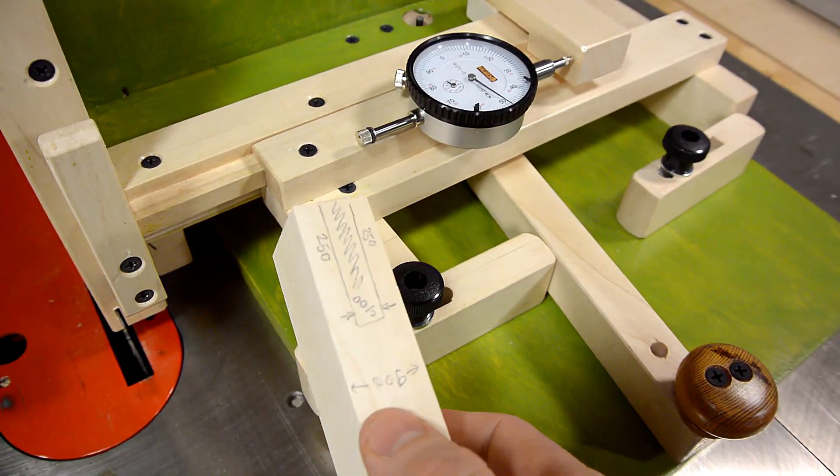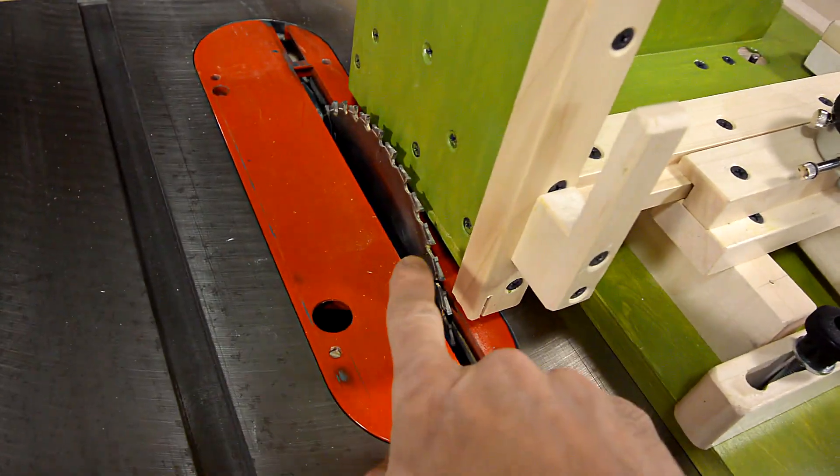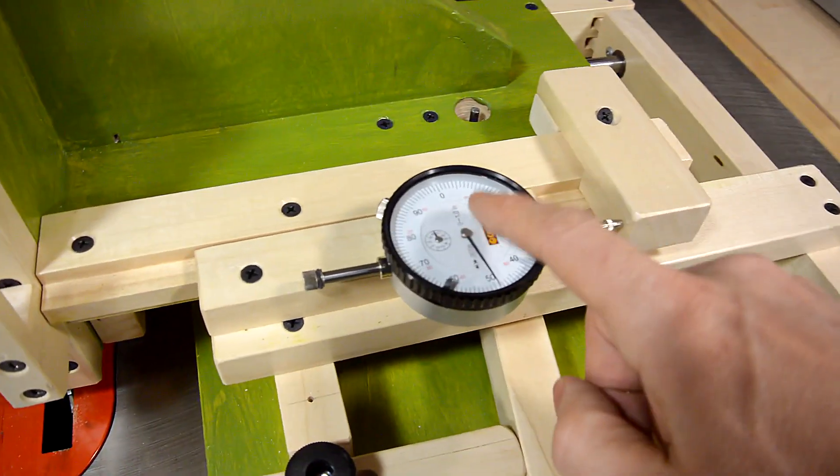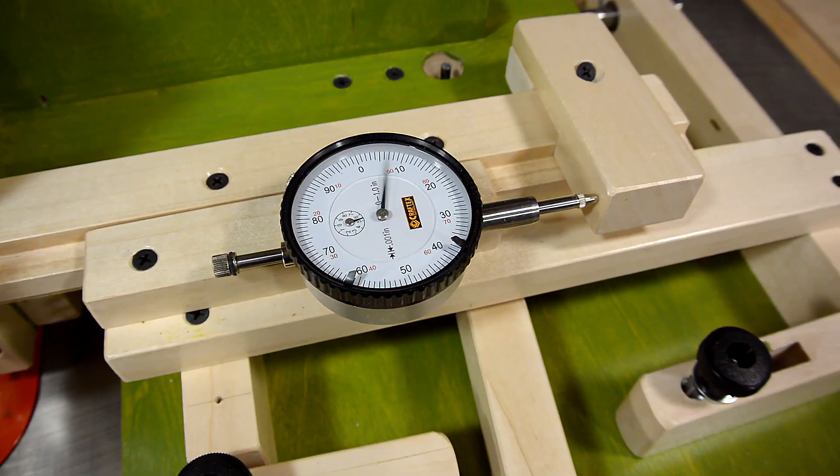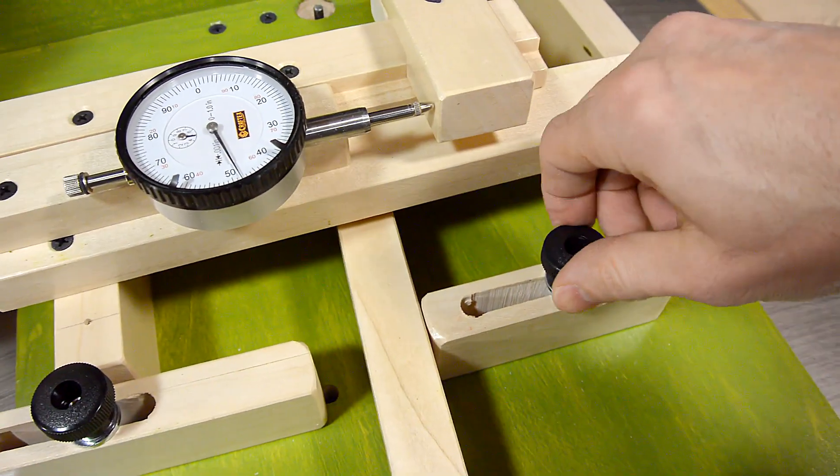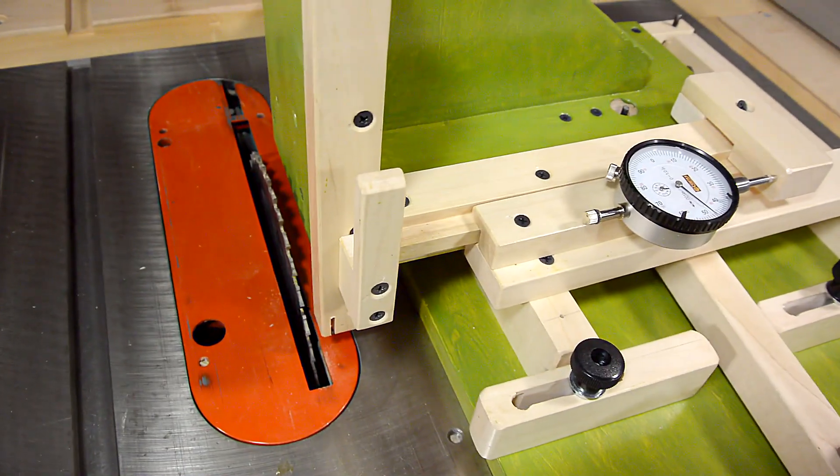And I want to make the hole in here 400 thou wide. And the blade itself cuts 100 thou, so I need to add 300 thou here. One, two, three. I set this stop here. And now I can move back and forth to hog out that bridle.